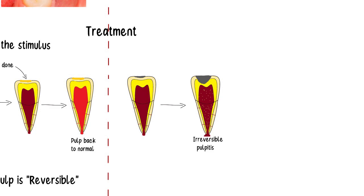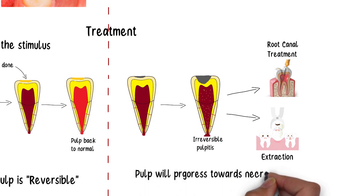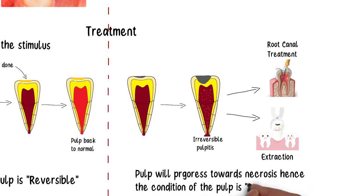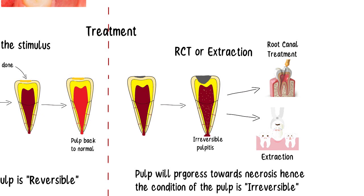Once the tooth is in the irreversible pulpitis state, removing the cause of inflammation such as the caries lesion will never be enough, as the pulp will eventually progress to pulpal death regardless. The only possible treatment is root canal therapy or extraction of the tooth. Simply removing the caries is not enough — there needs to be a definitive treatment for pulp removal, such as root canal treatment or, in worst cases, extraction.